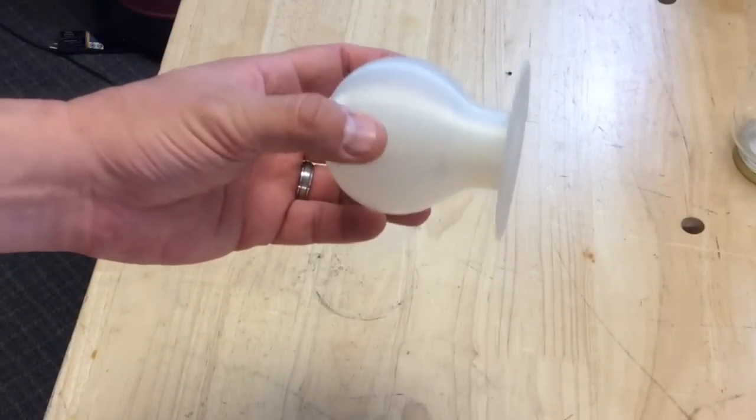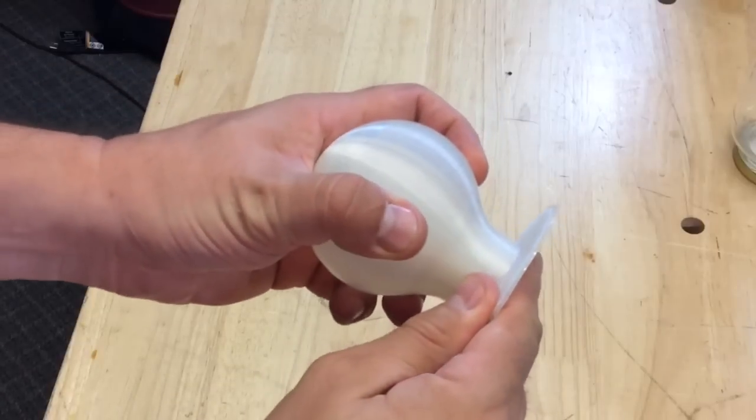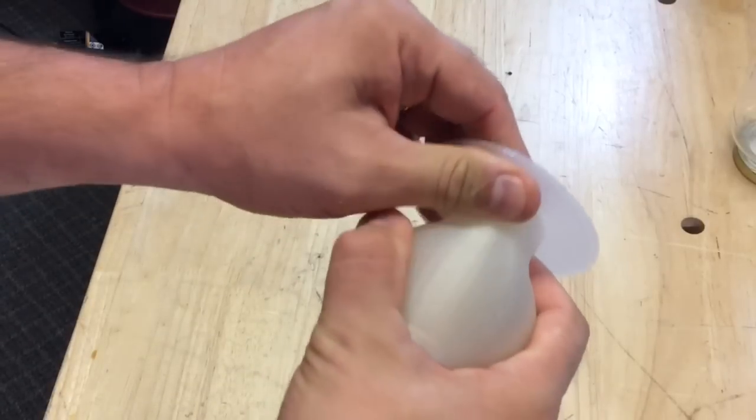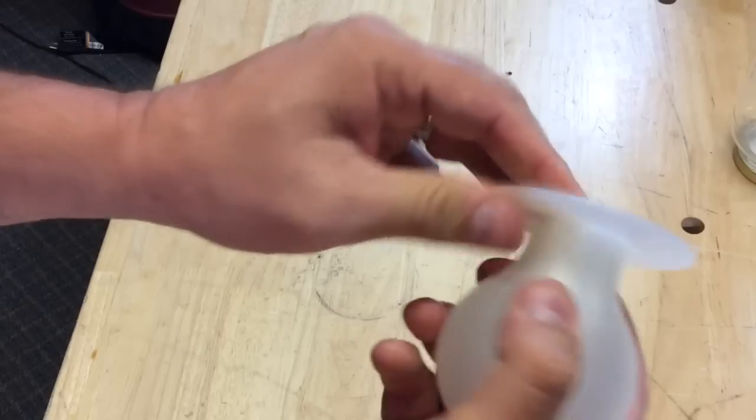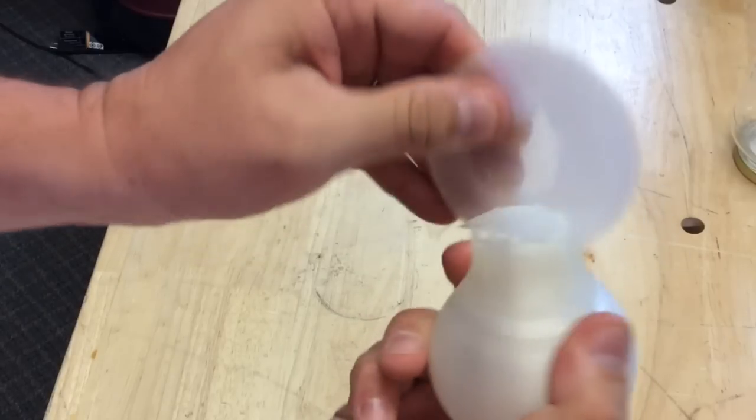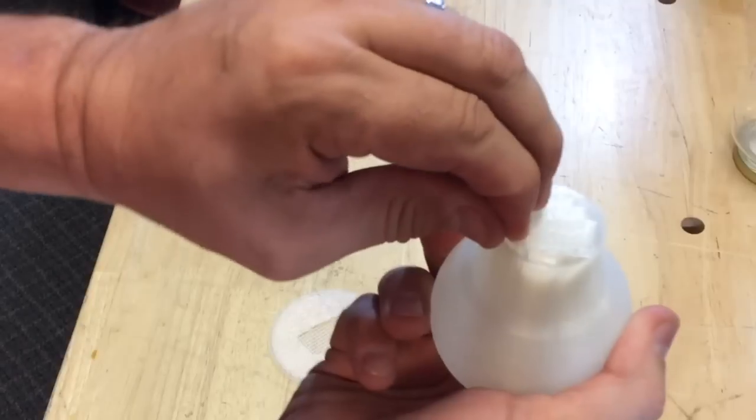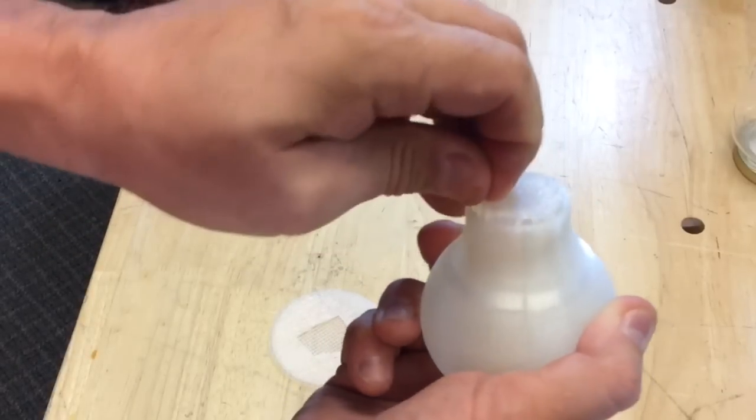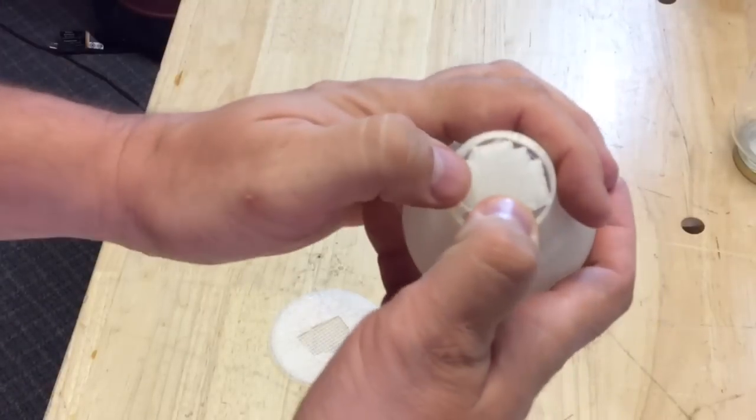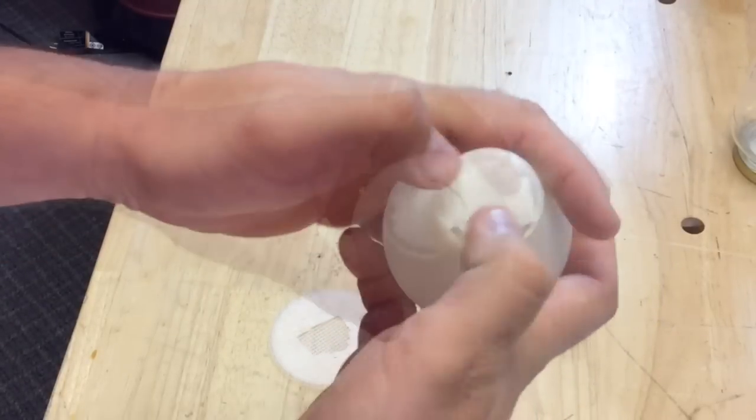So it lifted off the bed easily. I just needed to break away the raft and the support. Now this material is actually a transparent PLA that I used on my DaVinci Junior. DaVinci Junior said this spool was out of filament but it clearly wasn't. It was enough to print this bulb and actually another one. So this is why I don't use my DaVinci's as much.